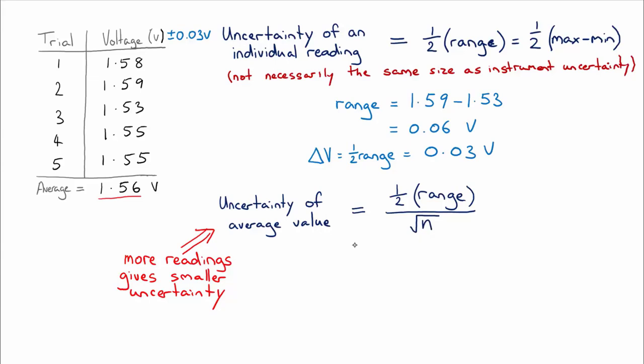So in our example here, we would have one half of the range, which is 0.06, divided by the square root of five readings that we took. And that gives us, if I've done my calculations right, 0.0134 volts.